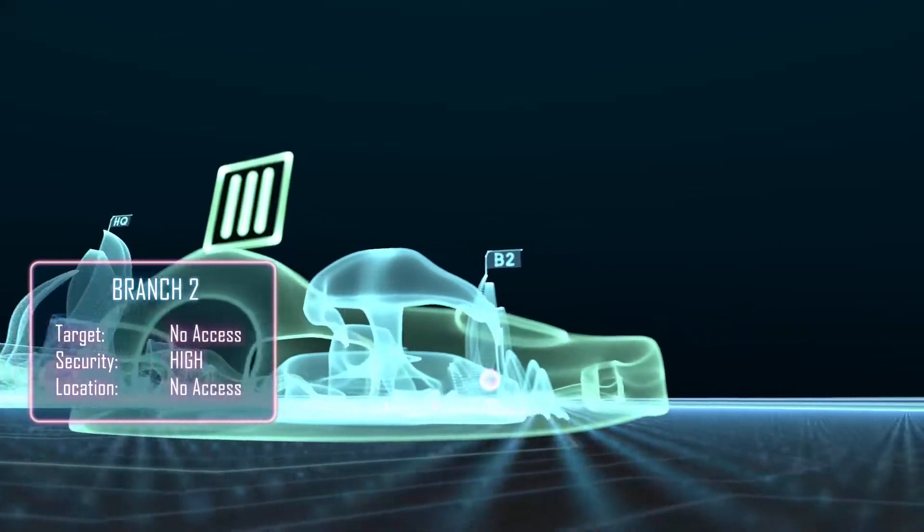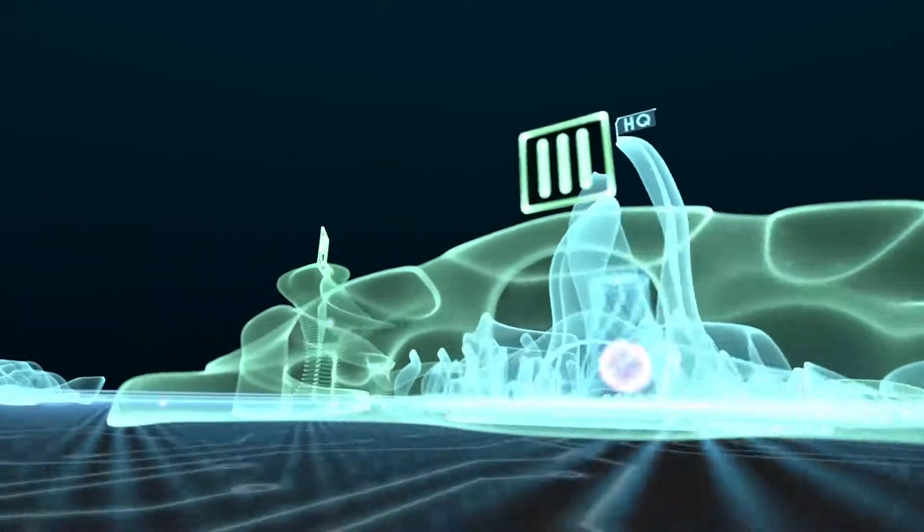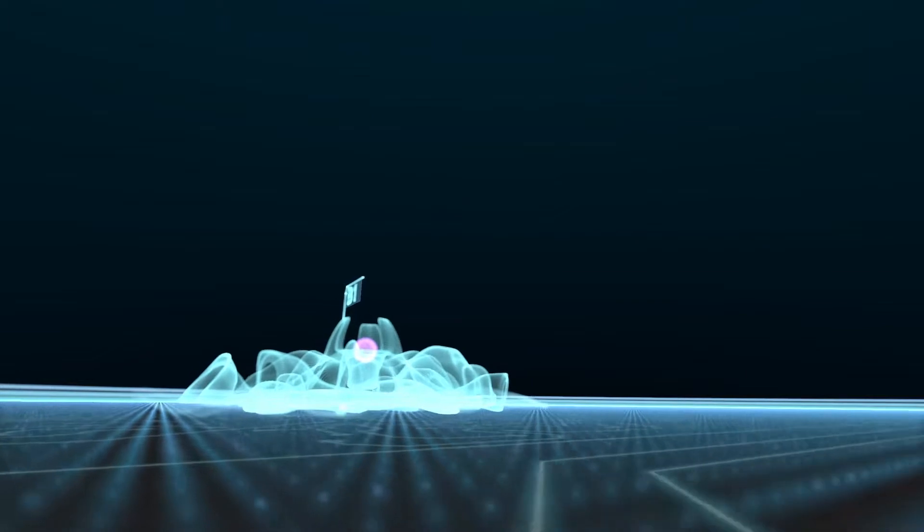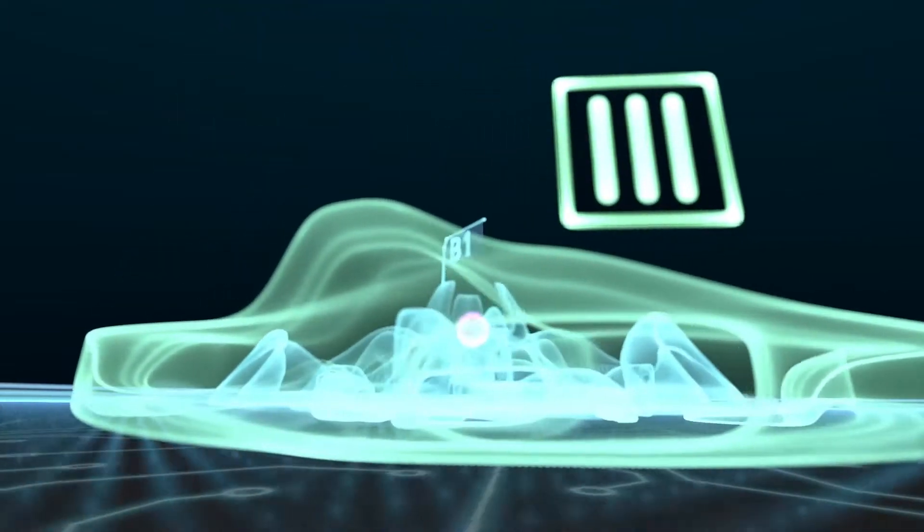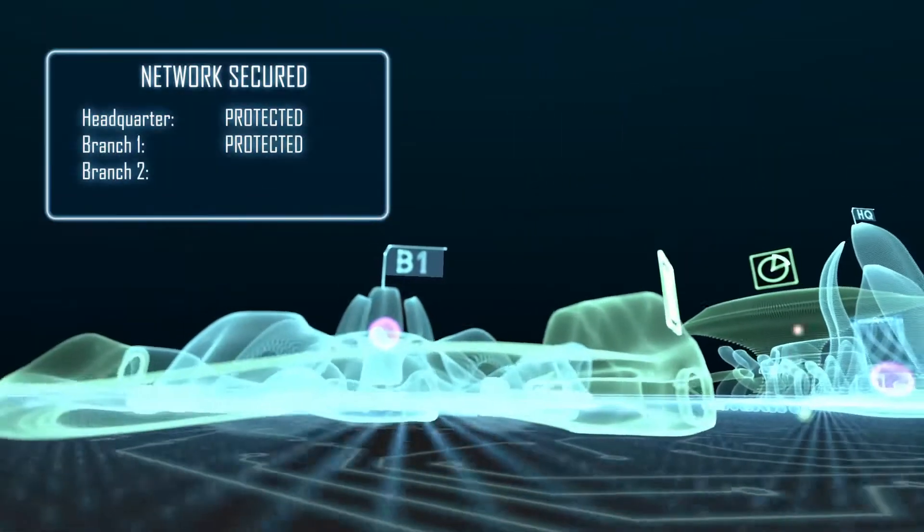Obviously, the FortiGate is the first line of defense at the branch, but it also facilitates business critical SD-WAN connectivity and simplifies overall branch deployments with managed wireless and switch networks.